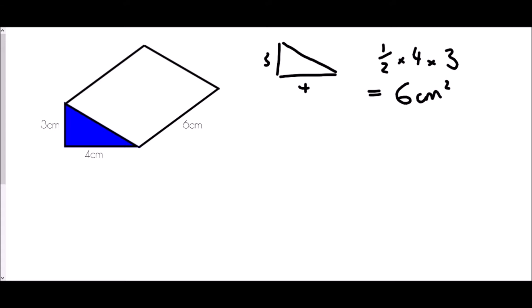But I want the volume, and so the volume comes from the area of the cross section multiplied by its length. So in this case, six times six equals 36 centimetres cubed.